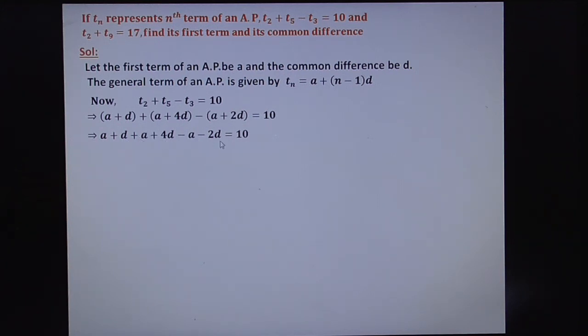D plus 4D, how much? 5D. 5D minus 2D, that is 3D. So this is nothing but A plus 3D equals 10. Let it be equation number 1.